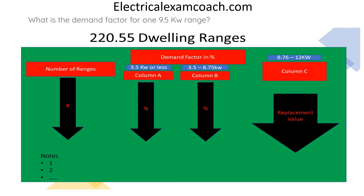To find this answer, we head to table 220.55. The first question we always ask ourselves is: what column does our range fall in? Ours is a 9.5 kW range, so it falls into column C. We start on the left-hand side of the table and find our number of ranges, which is 1. We come over and tee off with the column C value for one range, and we find that it's 8 kW. We have to remember that column C is not a demand factor, but rather a replacement value. So our 9.5 kW range only counts for 8 kW on our load calculation.